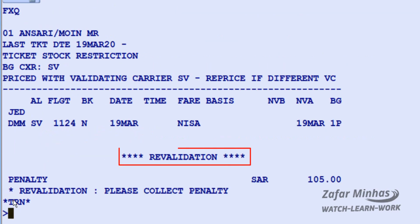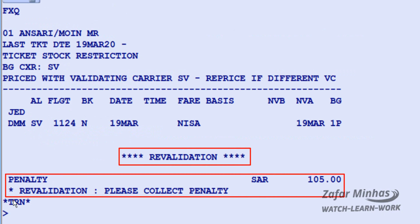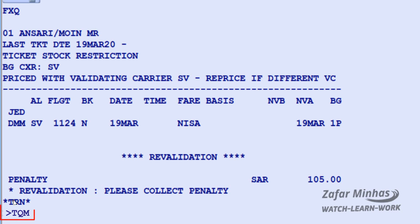Use FXQ — Amadeus Ticket Changer confirm pricing transaction. The system recommends revalidation and will collect 105 Saudi Riyal penalty fee including taxes. To display the created EMD TSMP record, use the TQM transaction.